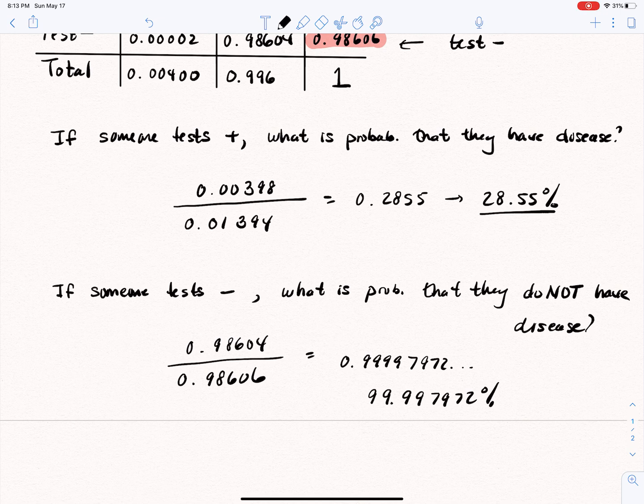So we're almost certain. So basically, if you test negative, you can pretty much be certain that you don't have the disease. There's a very, very, very small chance that you actually do. But the negative test result is definitely more reliable than the positive test result.